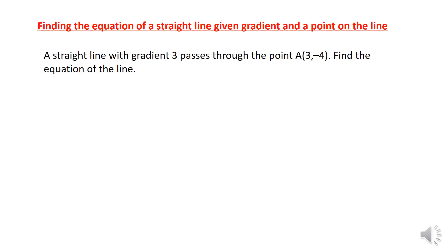Let us start the lesson. We are going to study how to find the equation of a line where gradients and the points of a line are given. Here I have an example: a straight line with gradient 3 passes through point A, which is (3, -4). Find the equation of the line.